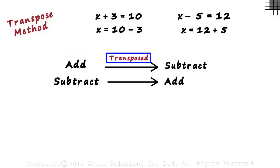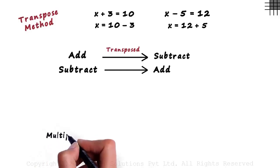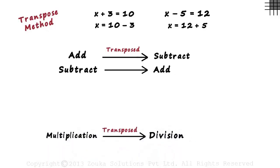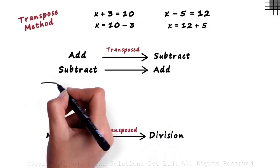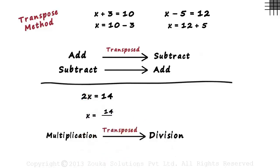Transpose basically means transferred. The concept is similar for multiplication and division. A term that is multiplied on one side is divided when transposed to the other side. Let the next equation be 2x equals 14. Since our aim is to have just the variable on the left hand side, we should eliminate 2. Since 2 is multiplied on the left hand side, we transpose it and divide the right hand side by 2. We get x equals 14 divided by 2.